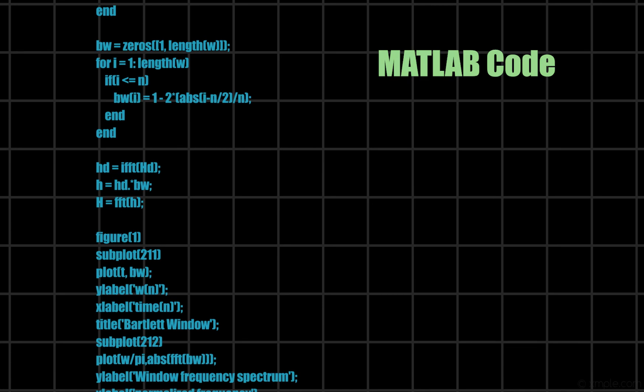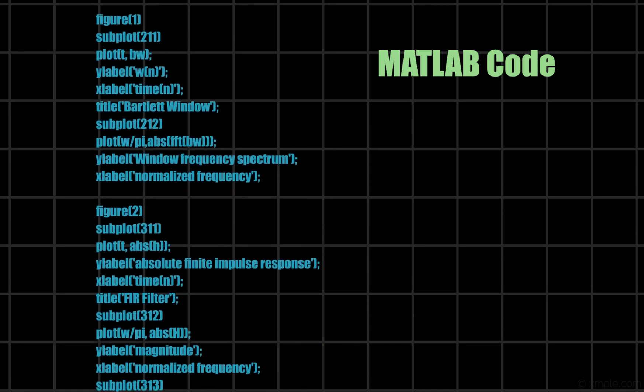After that, we use FFT function to find the Fourier transform of H to get its frequency spectrum. Finally, we plot all the graphs.